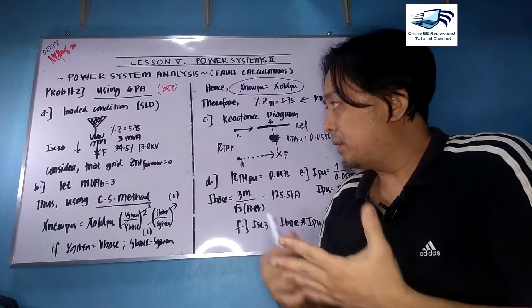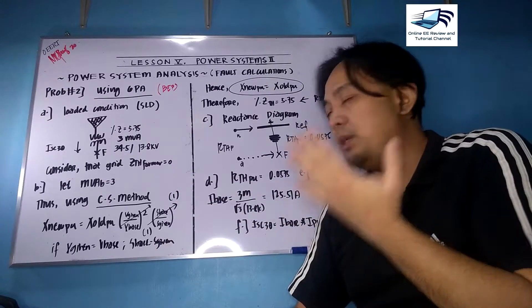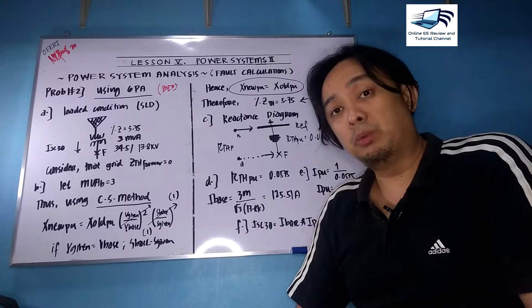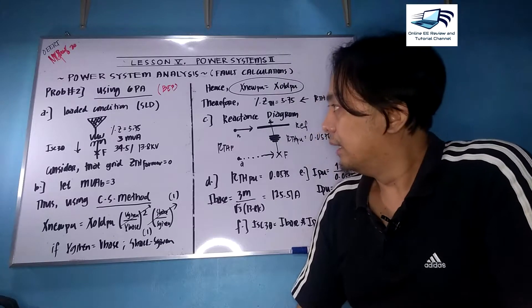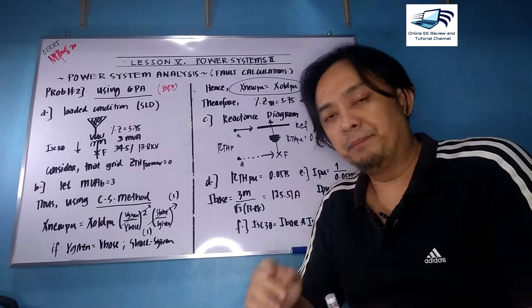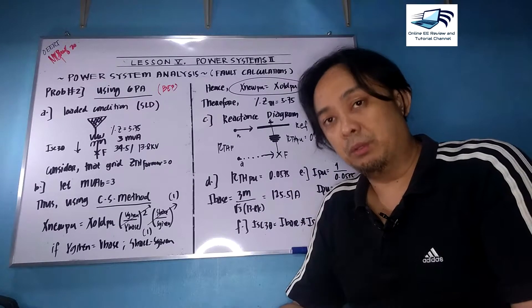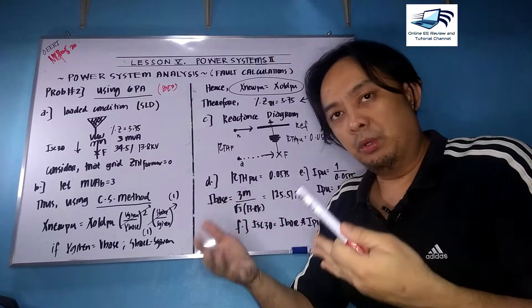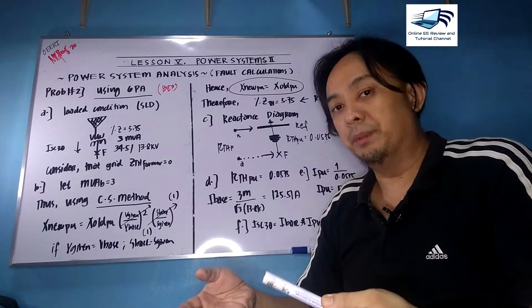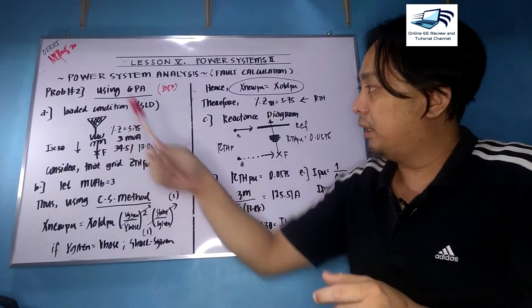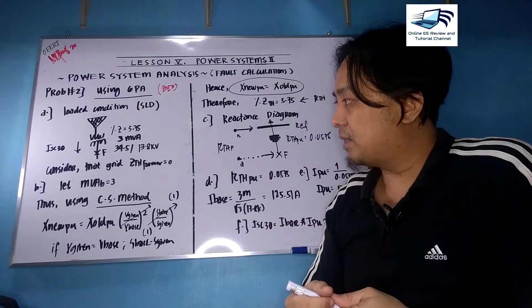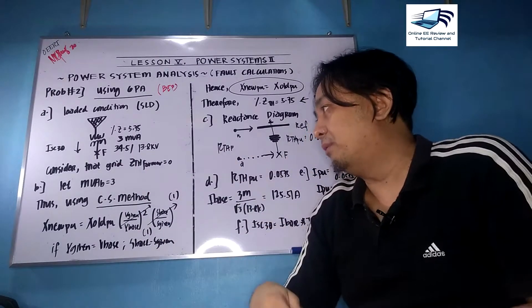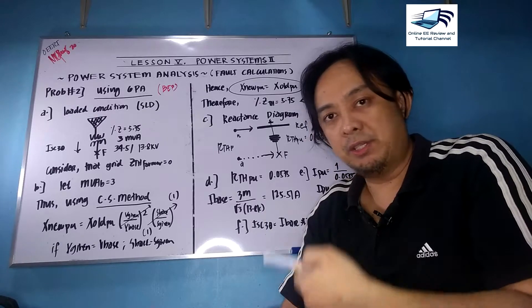Based on the problem, you can see here I already have the solution. This is a problem on fault calculations, and the solution we will use is the six-point algorithm. Based on the problem, there's only one impedance given, which is 5.75 percent. First, we need to draw the single line diagram. Here it is a loaded condition, but in this case the fault occurs at the secondary terminals here.